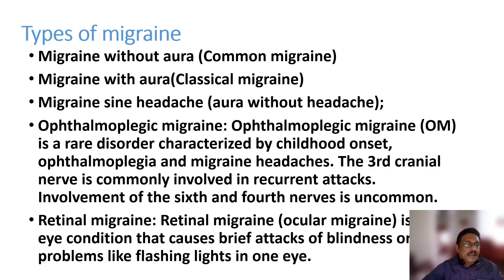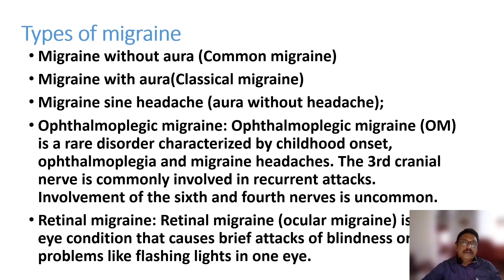Regarding types of migraine: aura can be sensory, motor, or visual. Migraine with aura is classical migraine; without aura is the more common form. There is also migraine sine headache — aura only, without headache. So migraine is classified into three types: with aura, without aura, and aura only.